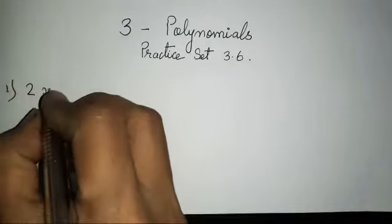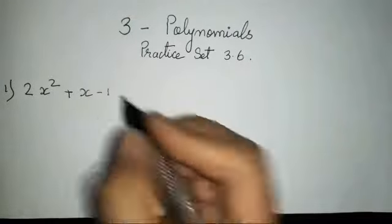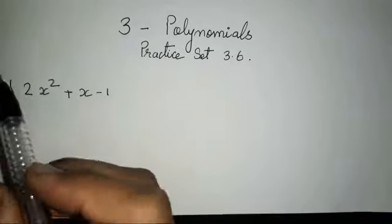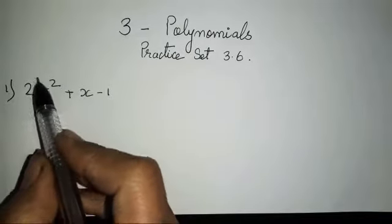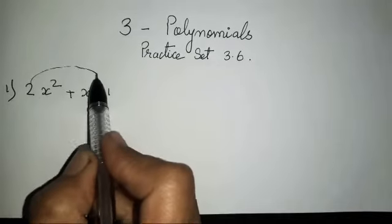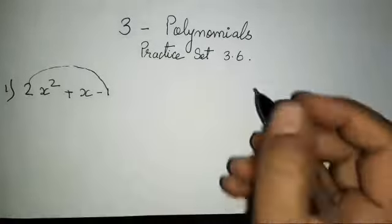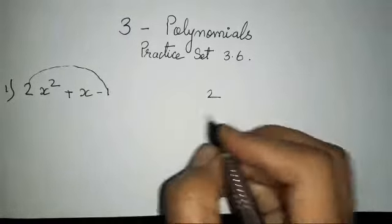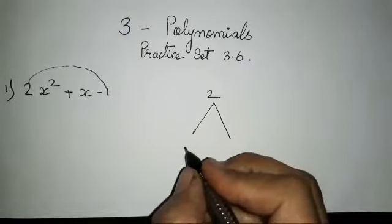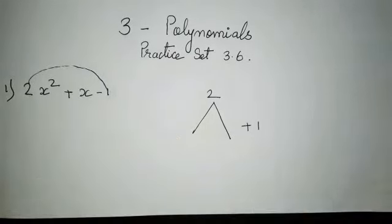Now simple factorization method that we have learned since 8th standard, the same thing we have to do in this video as well. What we have to do is multiply the first and the last term. That means this is the first term and this is the last term. You all have to multiply. So 2 into 1 is supposed to be 2.